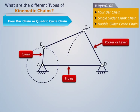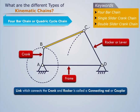We see that link BC connects the crank AB and rocker CD. Such a link which connects the crank and rocker is called a connecting rod or coupler.